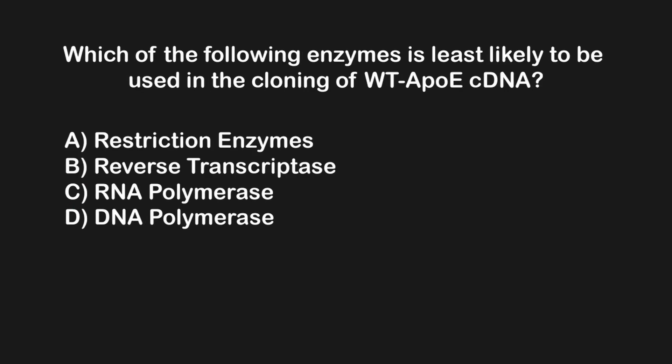Now let's look at another question: which of the following enzymes is least likely to be used in the cloning of wild type APOE cDNA? A) restriction enzymes, B) reverse transcriptase, C) RNA polymerase, or D) DNA polymerase. Even though this question asks about wild type APOE cDNA, we don't actually need to know anything about APOE. Since all cDNA is generated in the same way, this question is simply asking us about what enzymes are needed to generate cDNA in general, and which aren't.